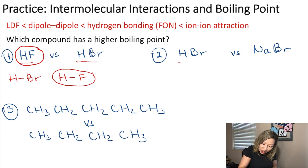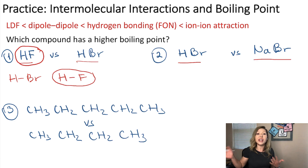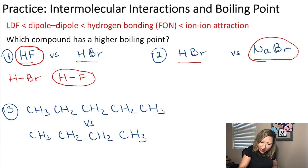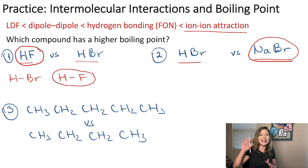The second pair is HBr compared to sodium bromide. I would choose sodium bromide right away because it has ion-to-ion attractions, and when you have that you see the highest boiling point.